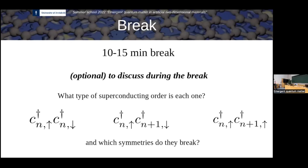So that term is odd by definition, and therefore it cannot be D. So that term can be either P-wave, it can be F-wave, it can be H-wave if it did exist, and so forth. So it can be any kind of spin triplet superconductor. So the last term is odd by definition.